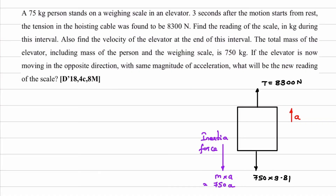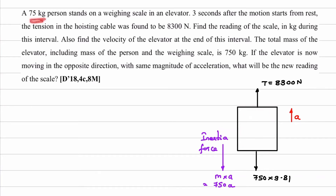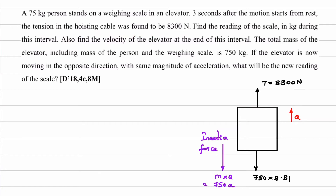Now understand the question. A 75 kg person stands on a weighing scale in an elevator. In this elevator there will be a weighing scale and on that weighing scale a person is standing. Mass of the person is given as 75 kg. Three seconds after the motion starts from rest, meaning U is equal to zero, initial velocity, and time given is three seconds. The tension in the hoisting cable was found to be 8300 Newton.